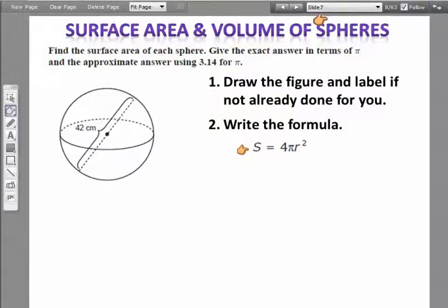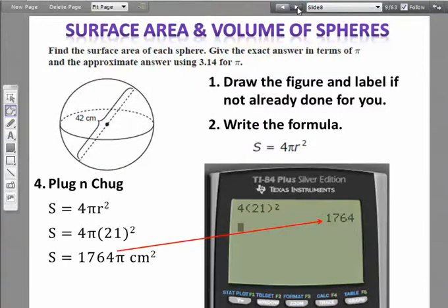You've got to write down your formula. The only variable you're going to have to worry about is the radius, and we know we're going to have to divide the diameter by two to get 21. Notice I've left out pi in my calculation.